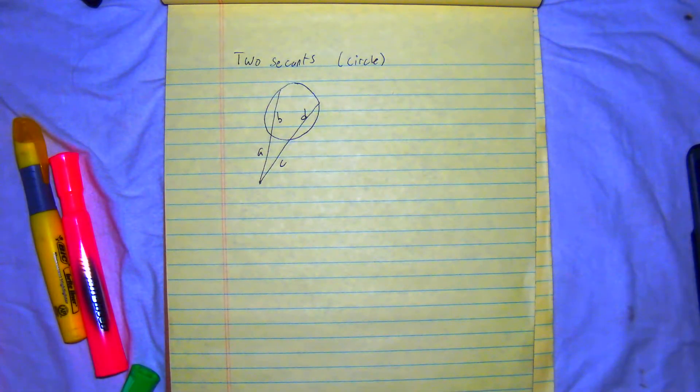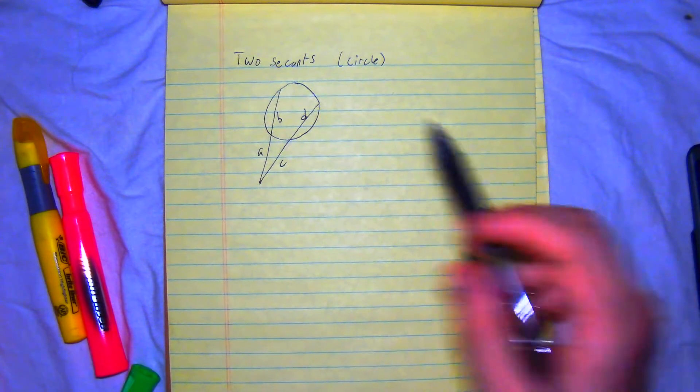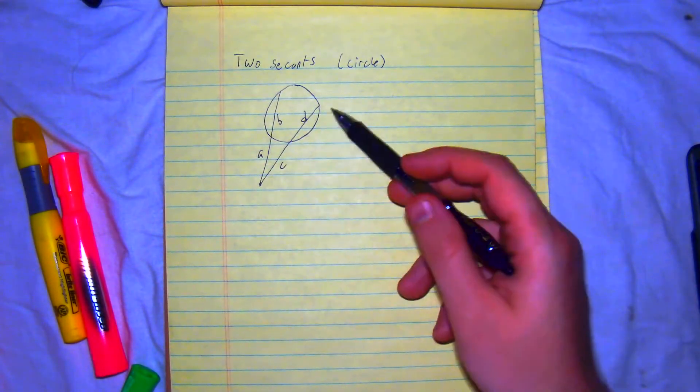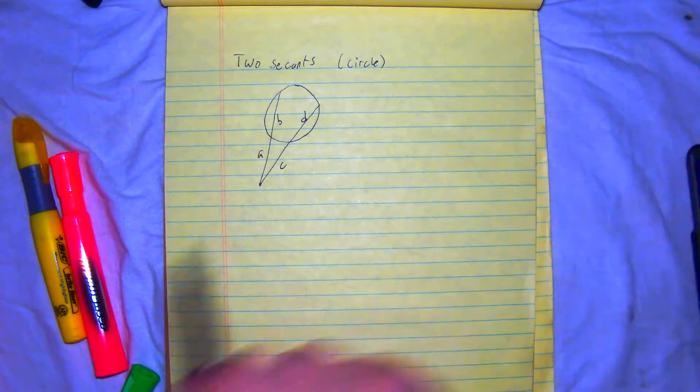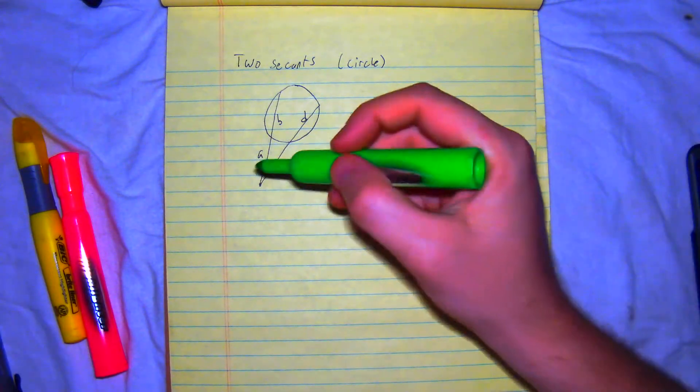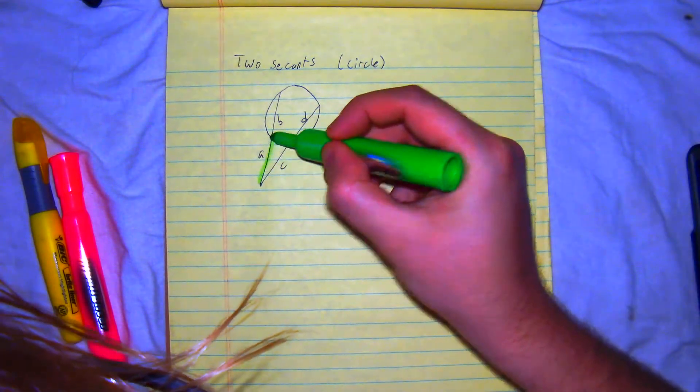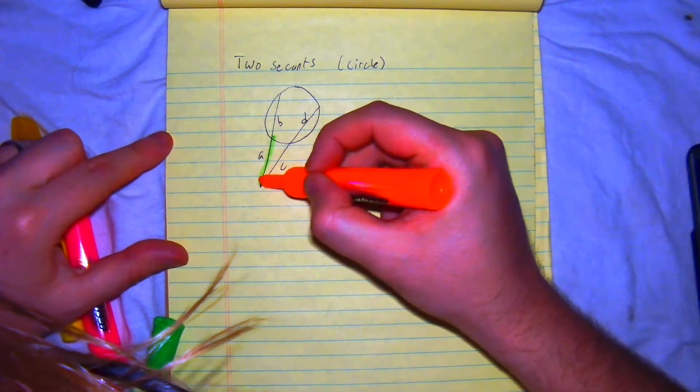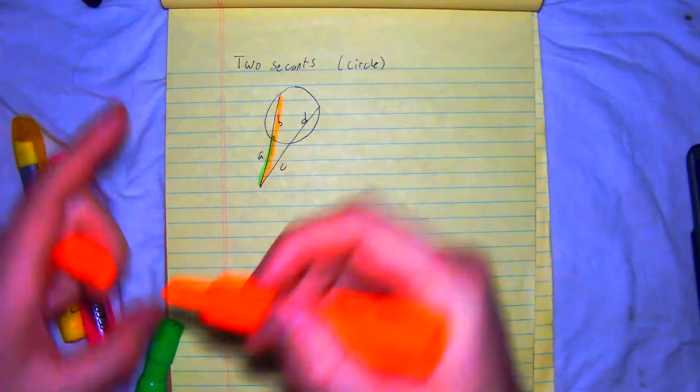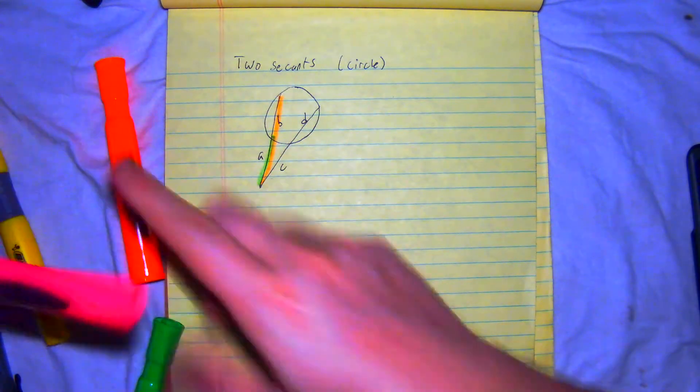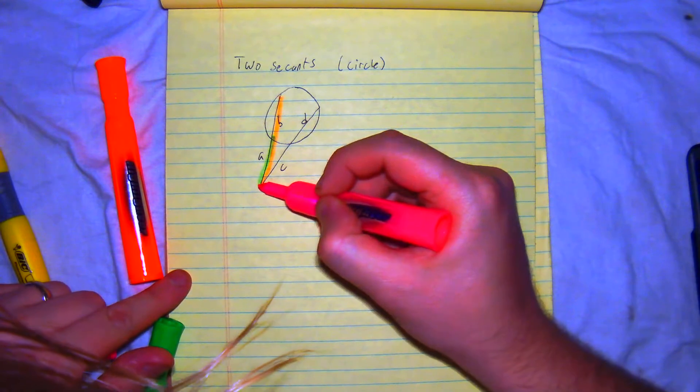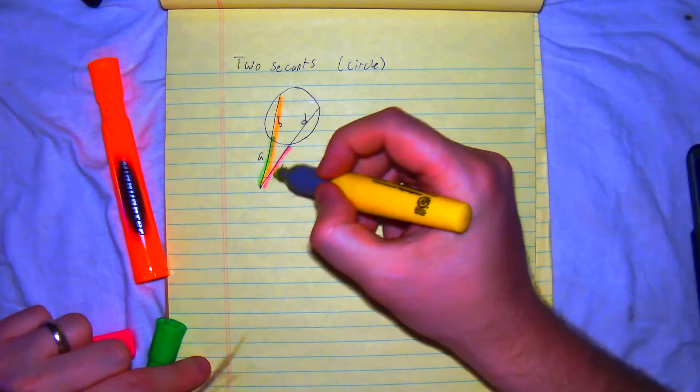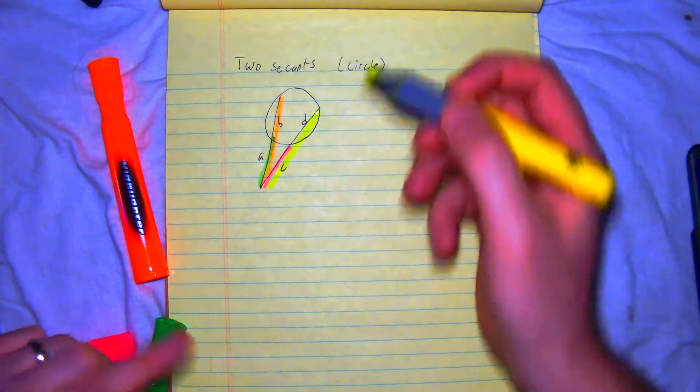So the way this one works is you always multiply the outside by the full length, outside by the full length. So, in essence, that's that part, and then you have to multiply it by the full length.